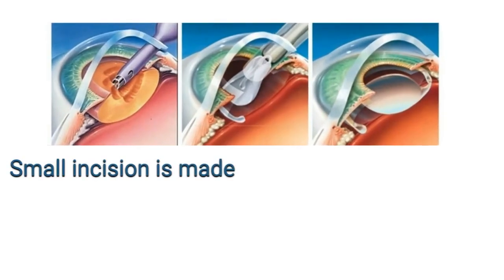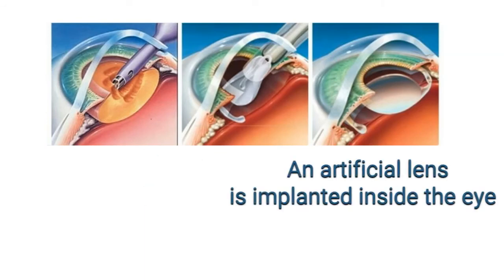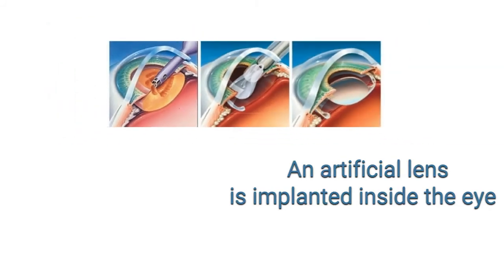During surgery, a small incision is made. Then the lens is removed by phacoemulsification. And finally, the artificial lens is implanted inside the eye.